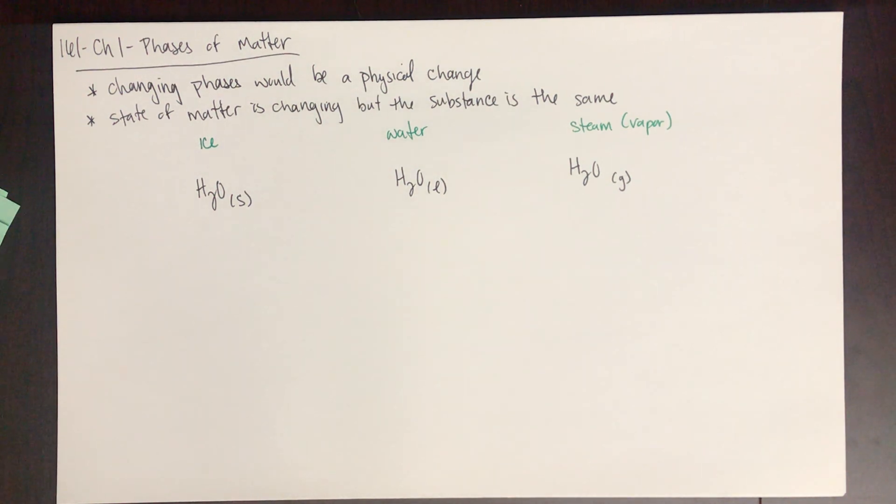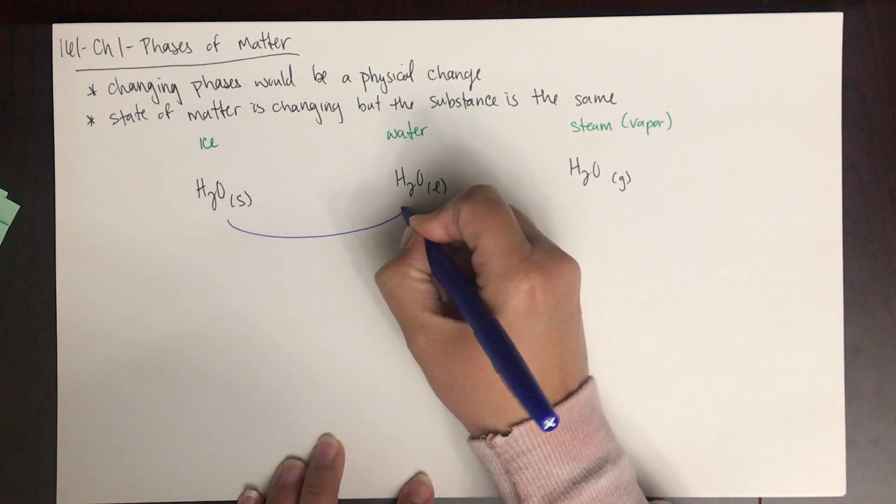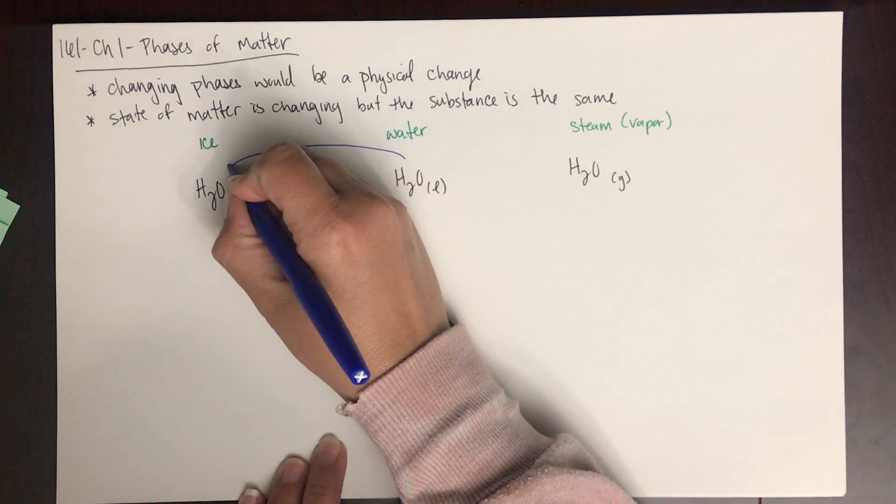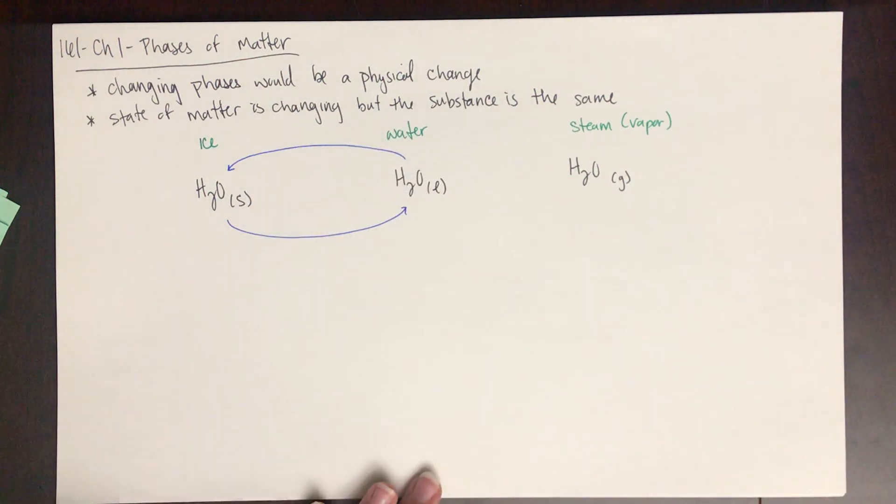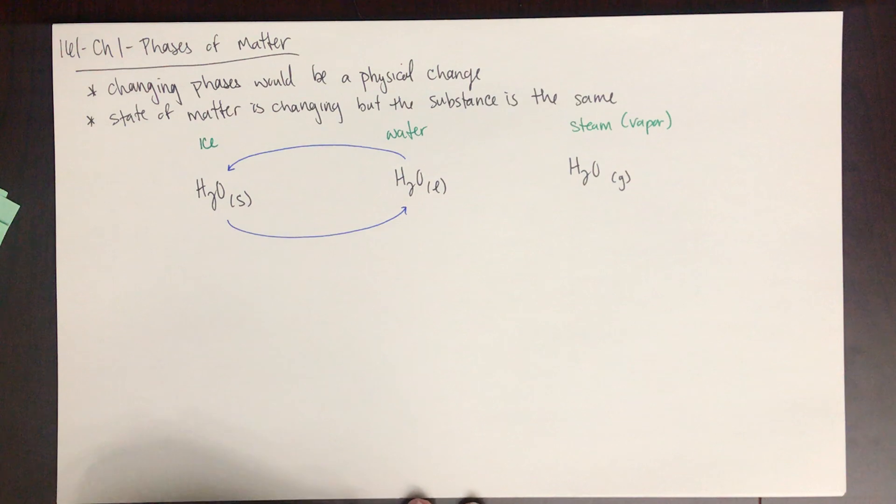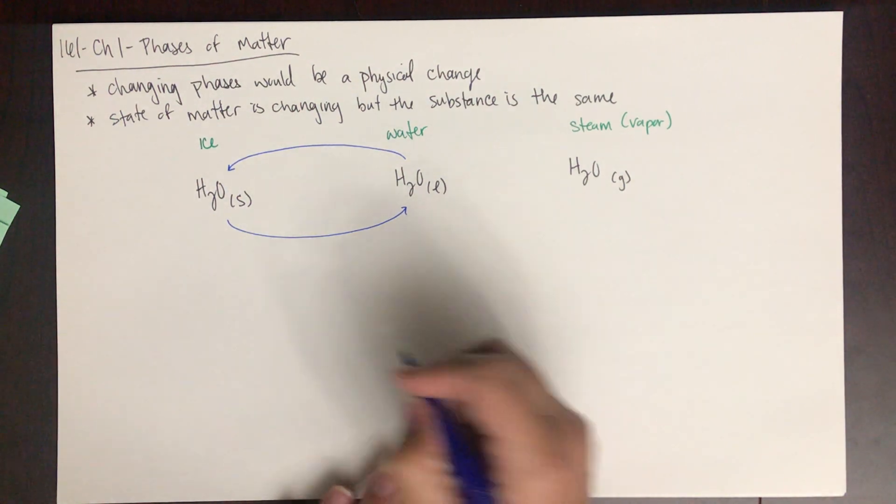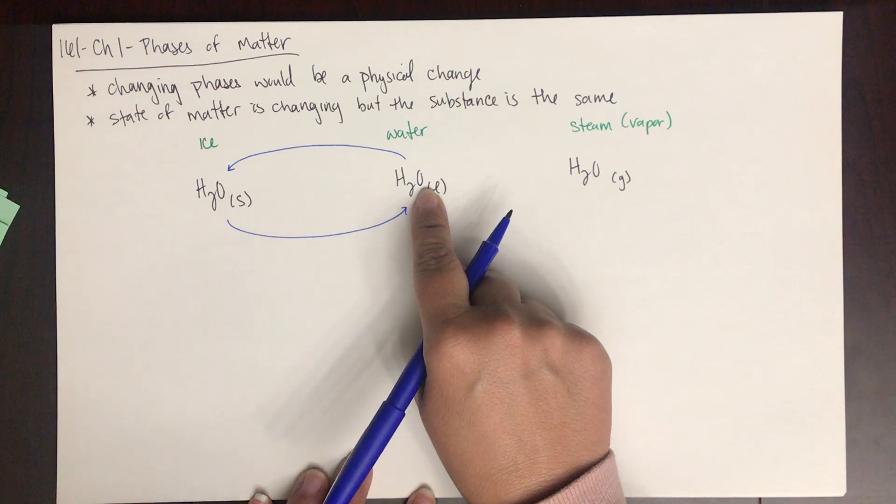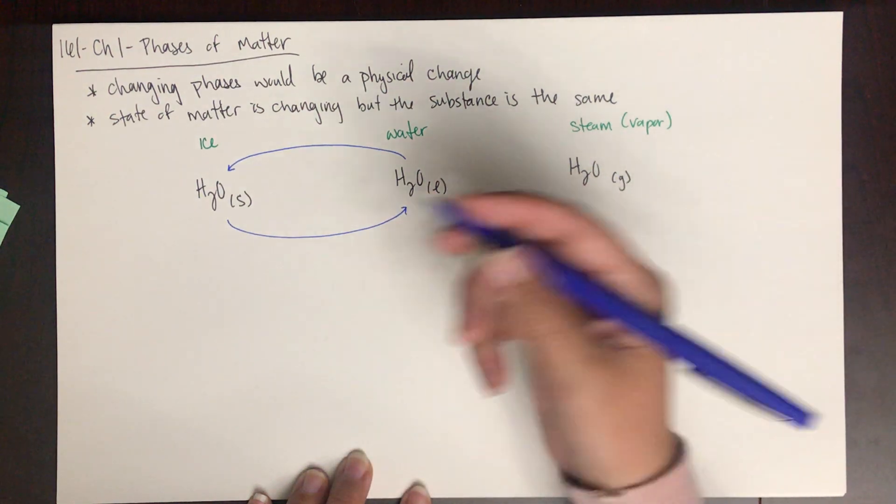Let's identify some key words. When we go between a solid and a liquid or a liquid and a solid, this is a phase change and we have different names. When you go from a solid to a liquid, we know that this is melting.